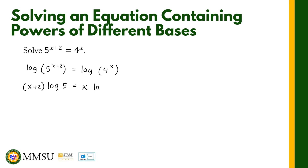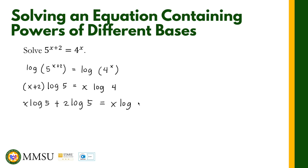We also apply the power rule on the right side, giving us x times the logarithm of 4. Then we apply algebraic rules: x plus 2 multiplied by logarithm of 5 is distributed, giving x·log(5) plus 2·log(5), and this equals x·log(4). Since both sides have an x variable, we need to combine those x terms together.